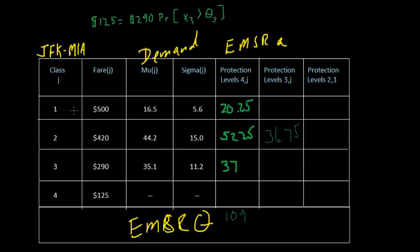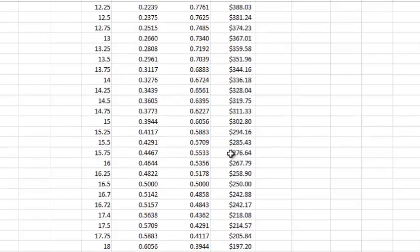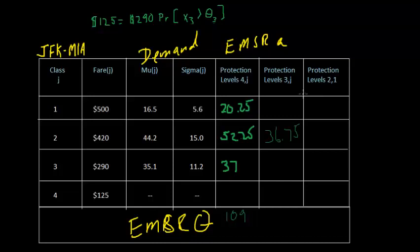And now we're going to do 3 against 1. So we have fare 1 at $500. The left-hand side doesn't change. The mu and sigma, we look for the EMSR again for 290, somewhere in between there. We'll go with the lower value, 15.25. So 15.25 seats for Class 1 against Class 3.